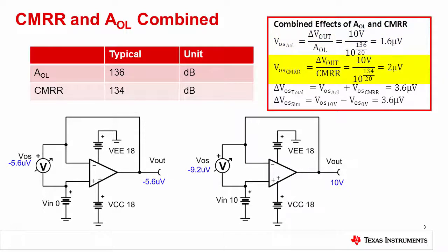Performing a similar calculation for CMRR yields 2 microvolts of offset shift. Directly adding the two errors yields 3.6 microvolts of total error. Notice that the simulated and calculated results match well.